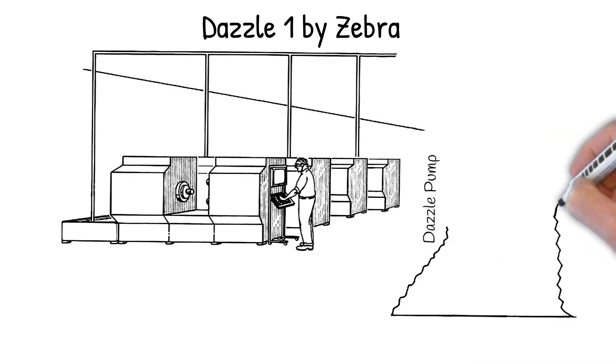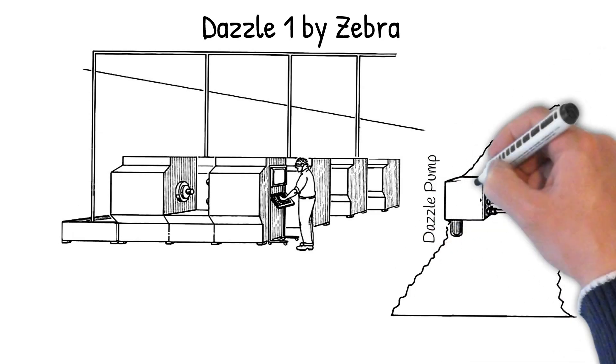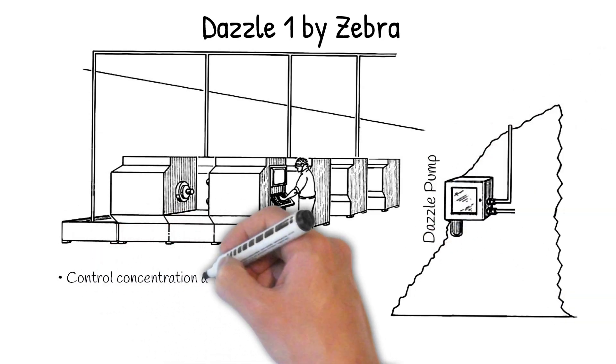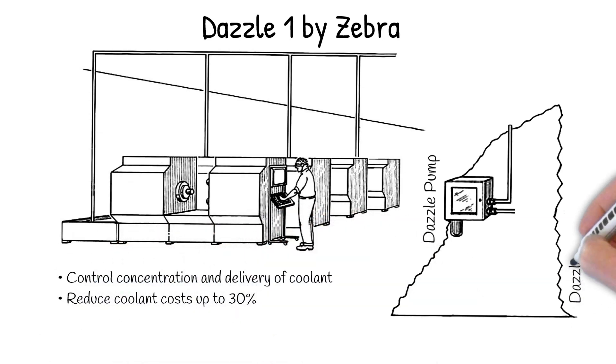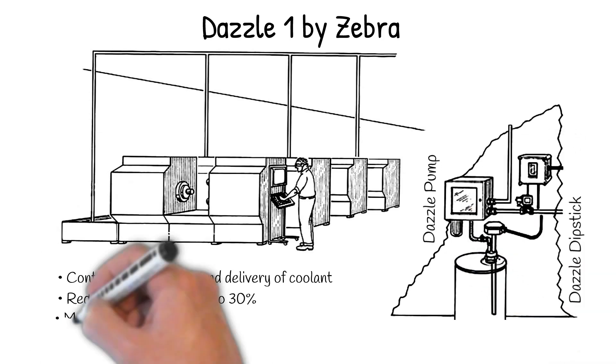Our system consists of the Dazzle Pump, which precisely controls coolant makeup concentration and its delivery, which can reduce coolant costs up to 30%. The Dazzle Dipstick continuously monitors coolant levels with visual and audible low-level alerts and reliably delivers neat coolant to the Dazzle Pump.